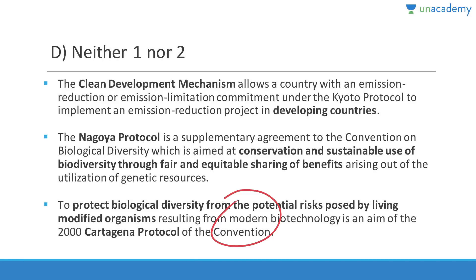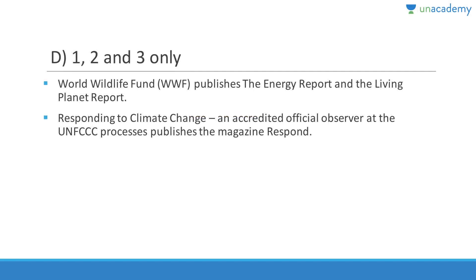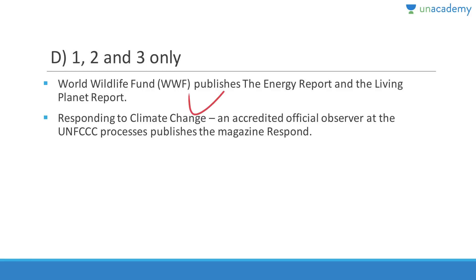Question 339: IUCN publishes the Red Data Book, UNEP publishes the Global Environmental Report and the Rise of Environmental Crime report — all correct. WWF publishes the Energy Report and the Living Planet Report (not Respond magazine). UNFCCC publishes Respond magazine. Answer is (1,2,3).